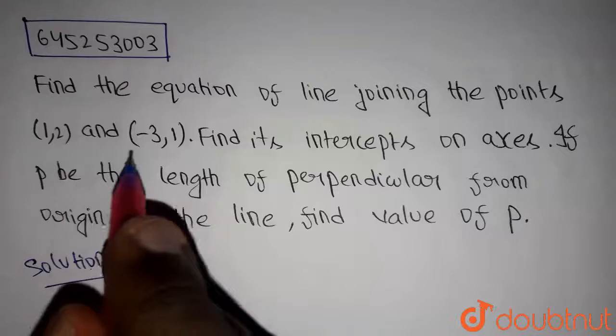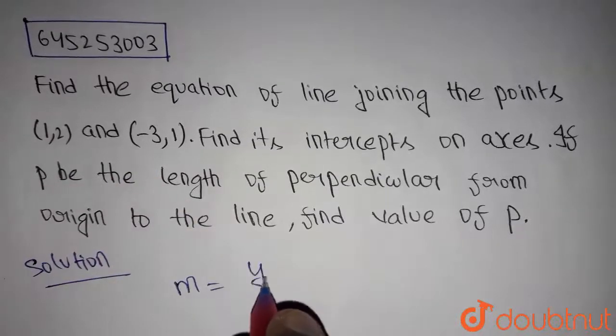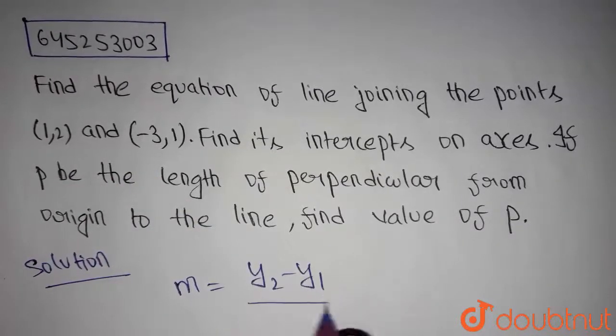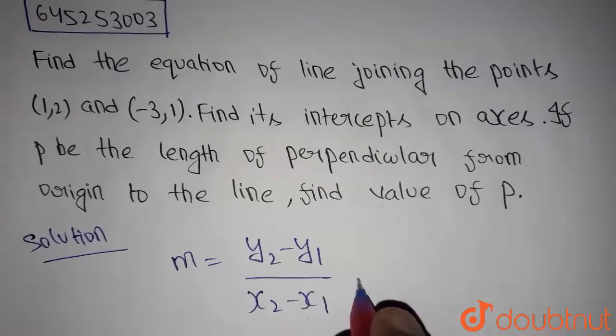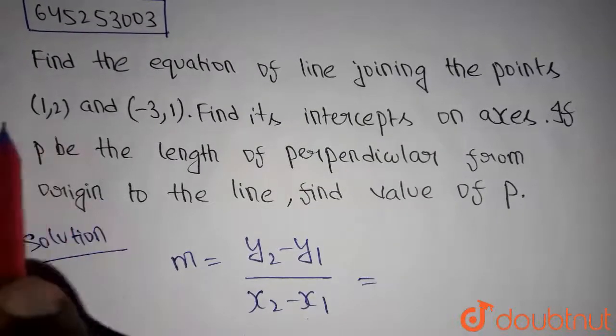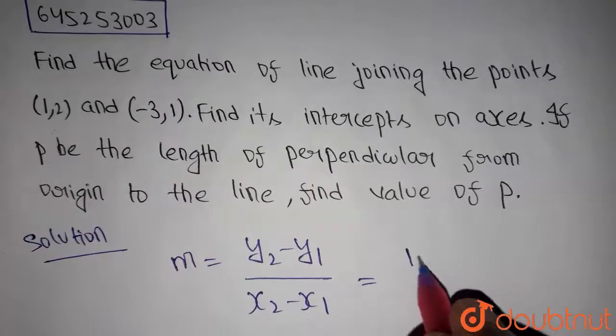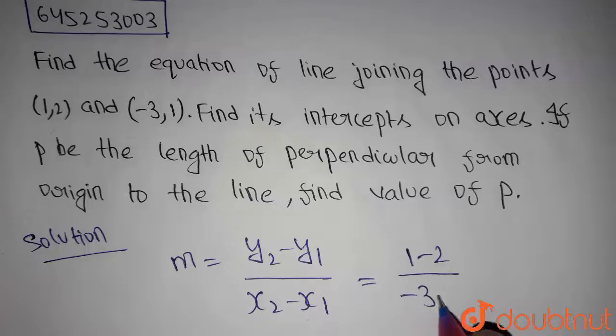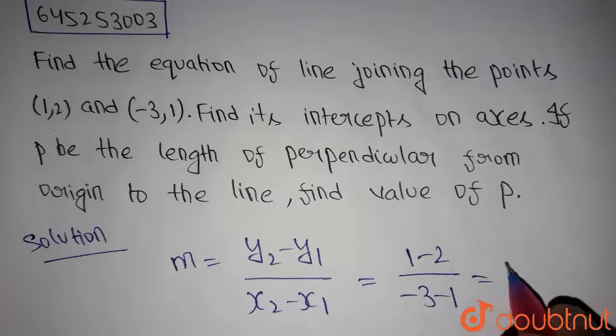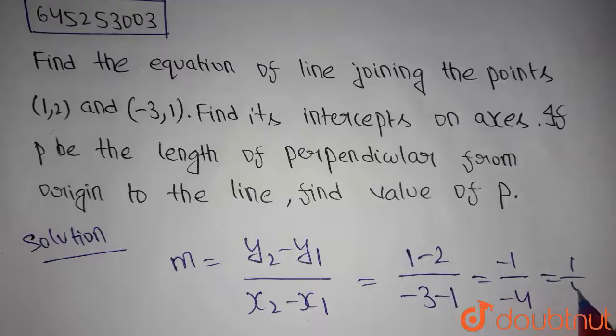Now, the slope of the line joining these two points is given by y2 minus y1 divided by x2 minus x1. So, consider x1, y1 as this point and x2, y2 as this point. So, we get 1 minus 2 divided by minus 3 minus 1 which is equals to minus 1 by minus 4 which is equals to 1 by 4.